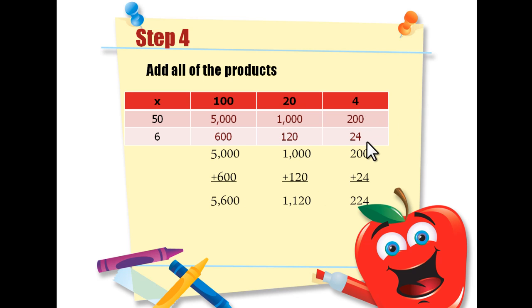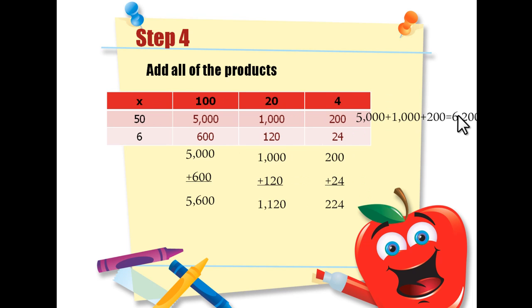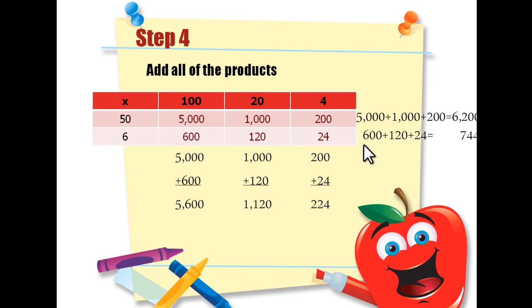200 plus 24 equals 224. Now I'm not going to stop there. I will now add all the products together in the rows so that I can check my answers later. So 5000 plus 1,000 plus 200 equals 6,200. And 600 plus 120 plus 24 equals 744.